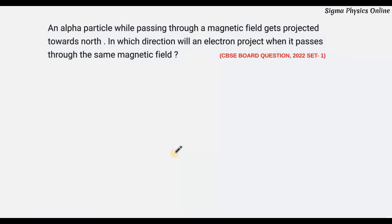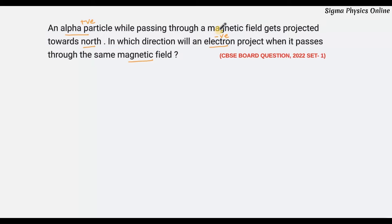Welcome back students. Let's look at the next question from magnetic effect of current. An alpha particle while passing through a magnetic field gets projected towards the north. In which direction will an electron be projected when it passes through the same magnetic field? Alpha particles are positively charged and electrons are negatively charged. We need to find the direction of force on the electron.